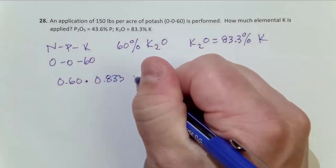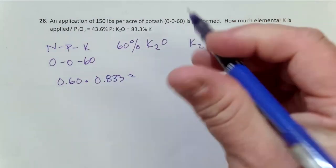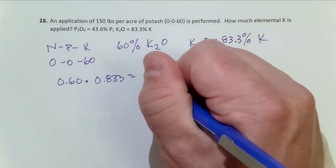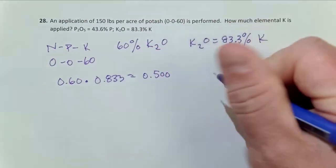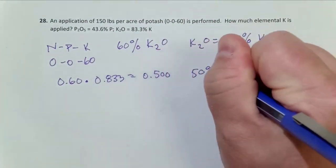If I make that multiplication, I know that my fertilizer is actually 0.500 or 50% elemental K.